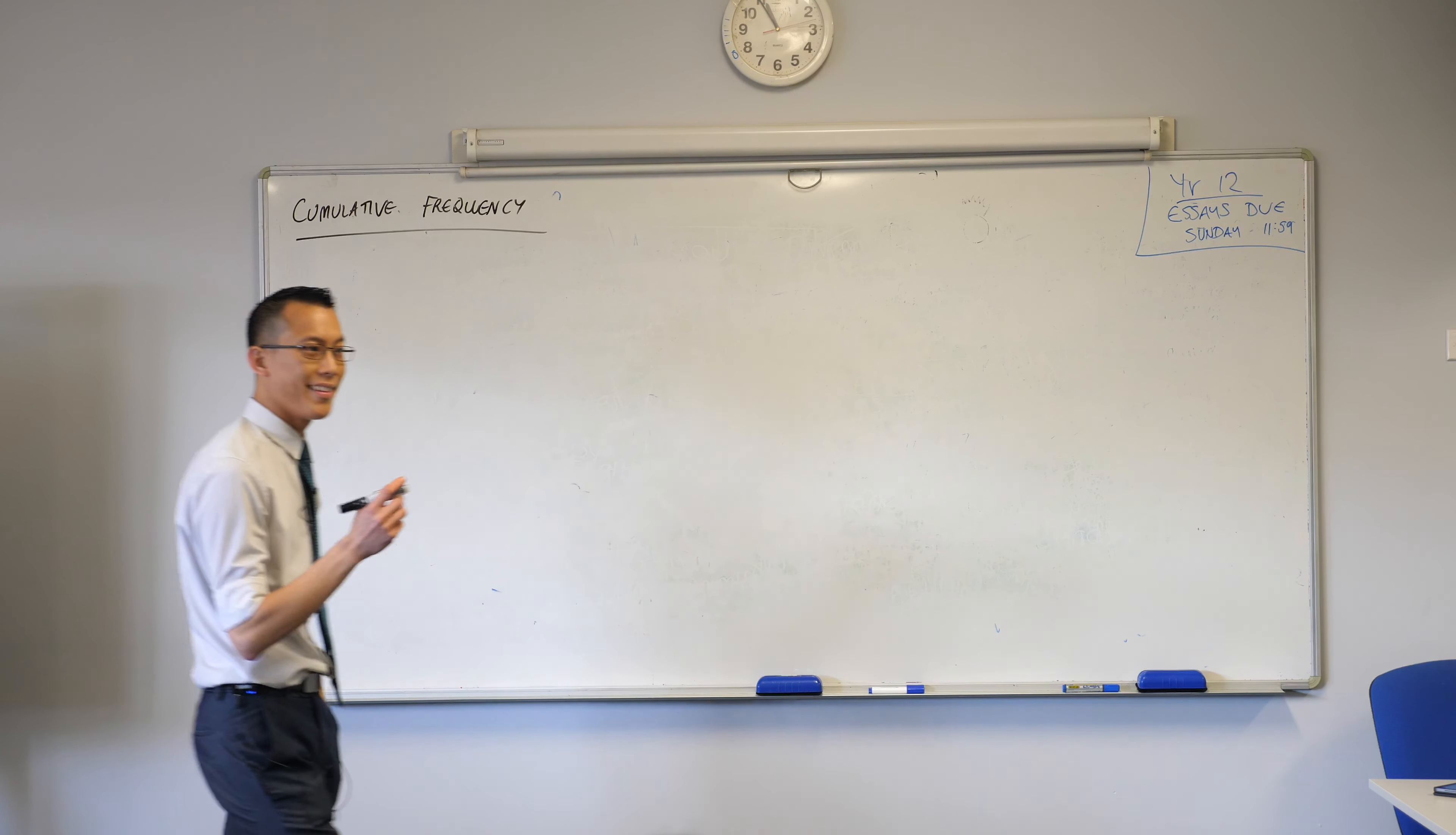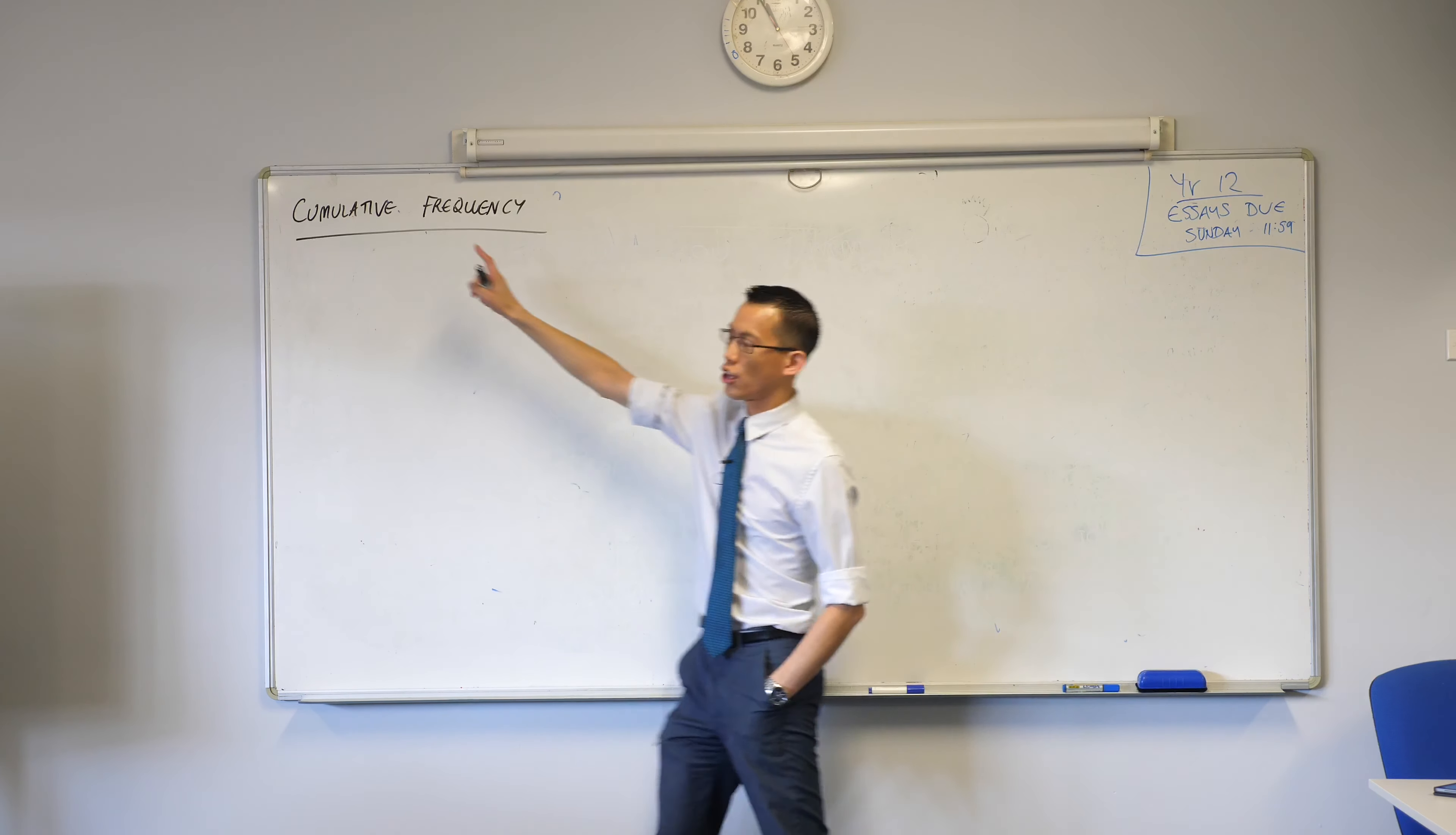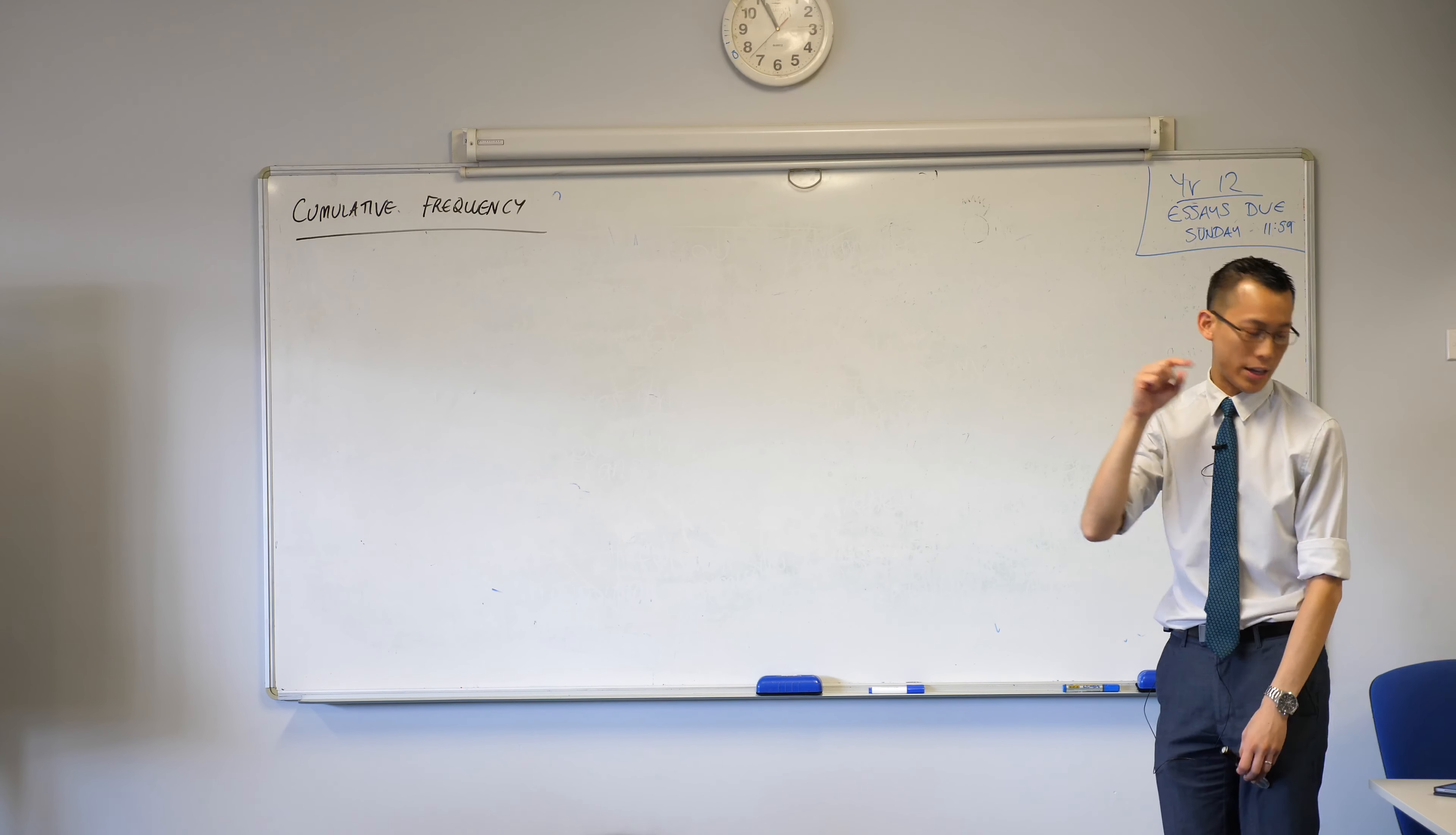Cumulative frequency. Now let's think about where we are in this topic. We know what frequency means, right? How frequently, how many times an event or score occurs within a data set. Now this word cumulative out the front means we're not just going to count how many individually there are per score, we're also going to include the accumulation of all the previous scores as well. Hence cumulative.